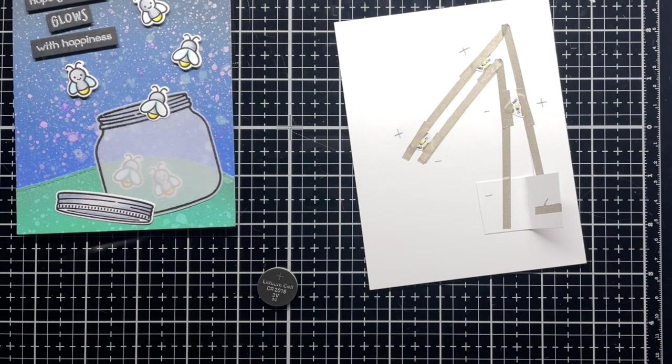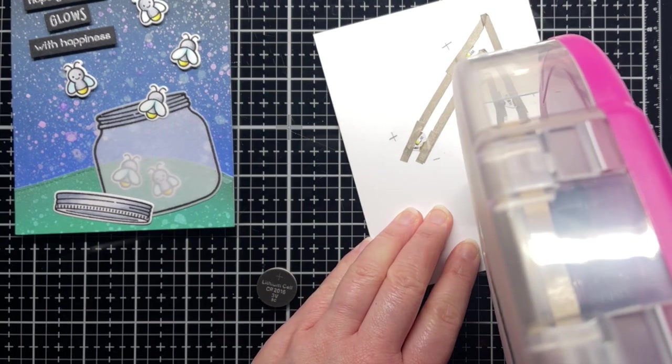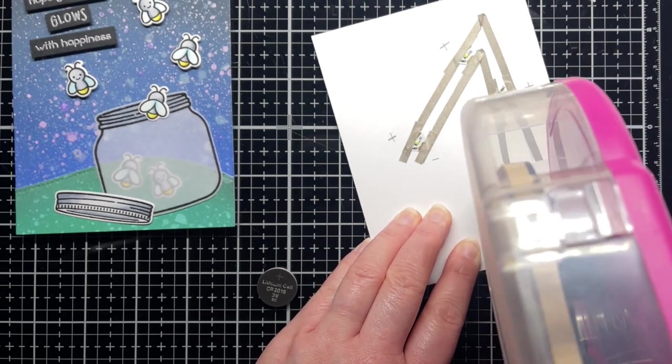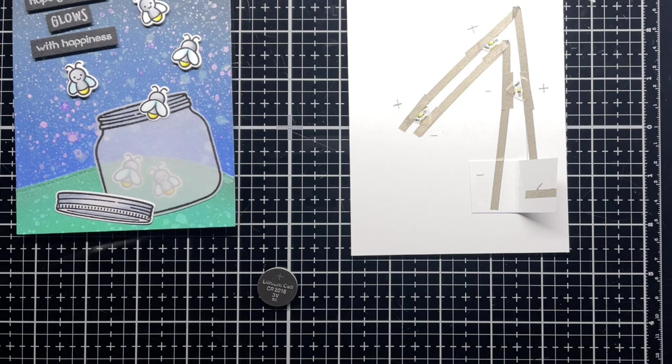I add a little adhesive to the holder alongside the negative piece of tape. I don't cover the tape with adhesive, and this helps hold my battery in place.